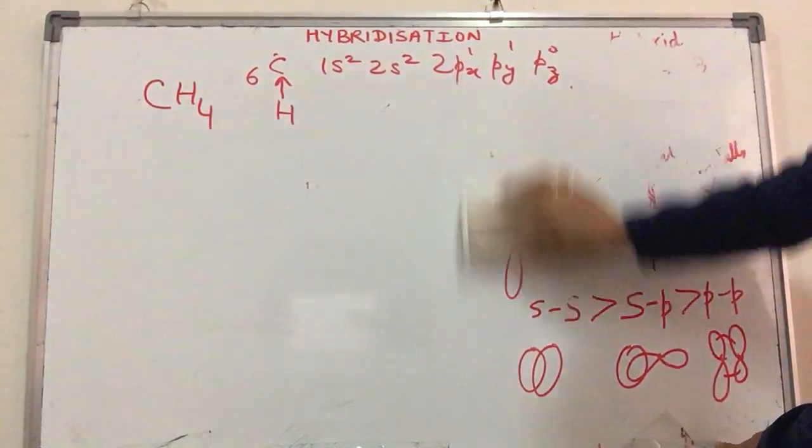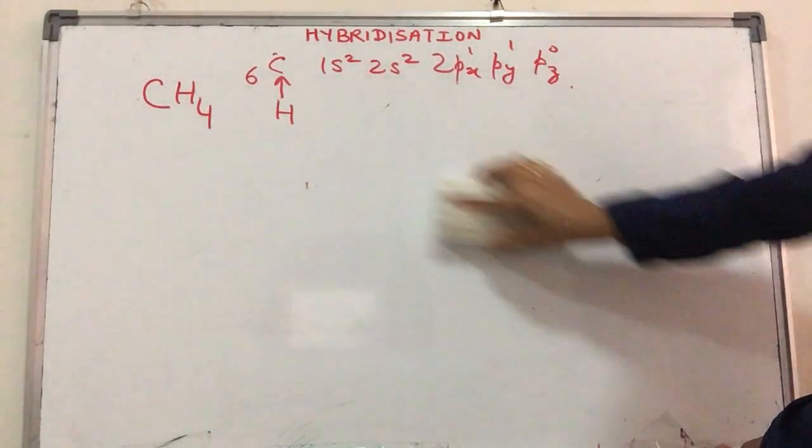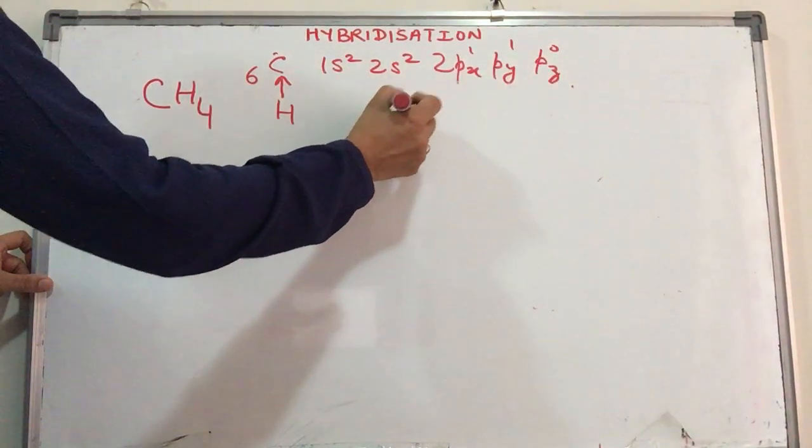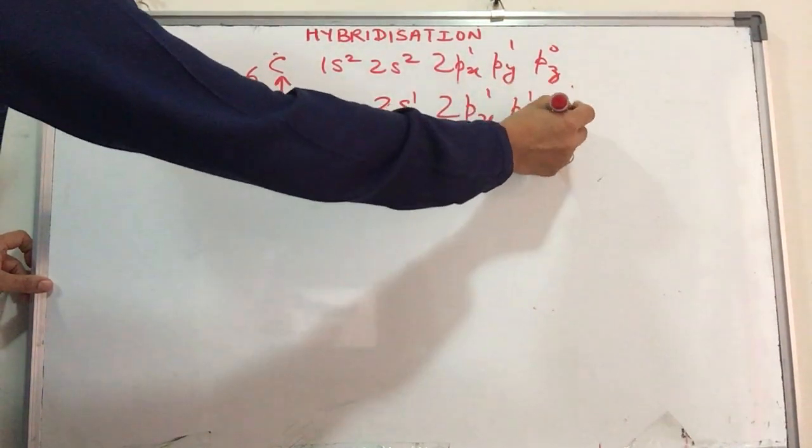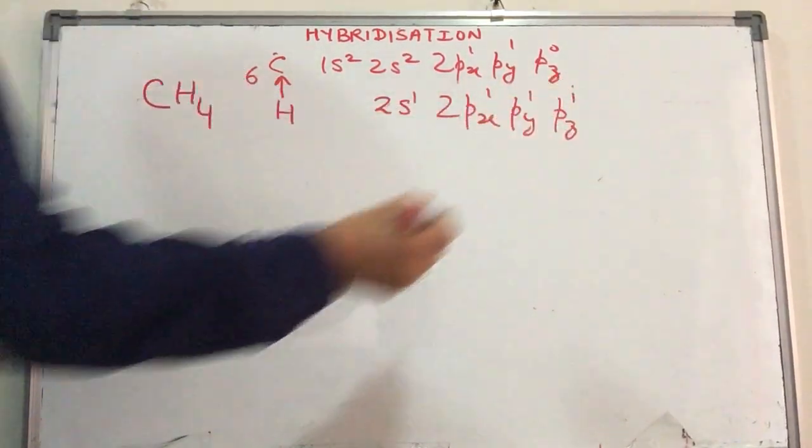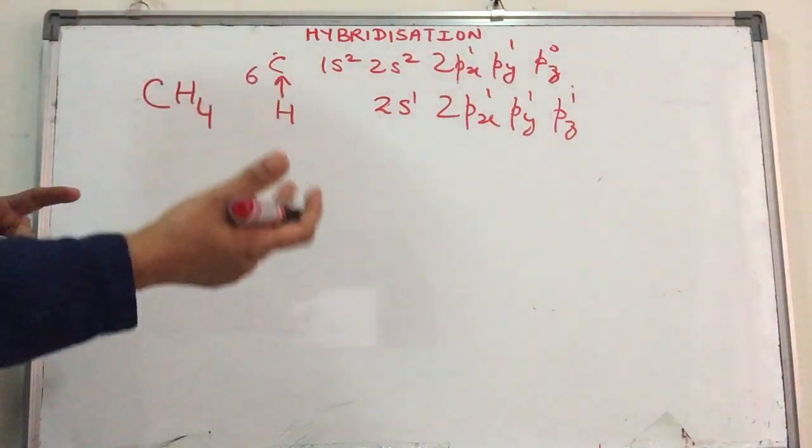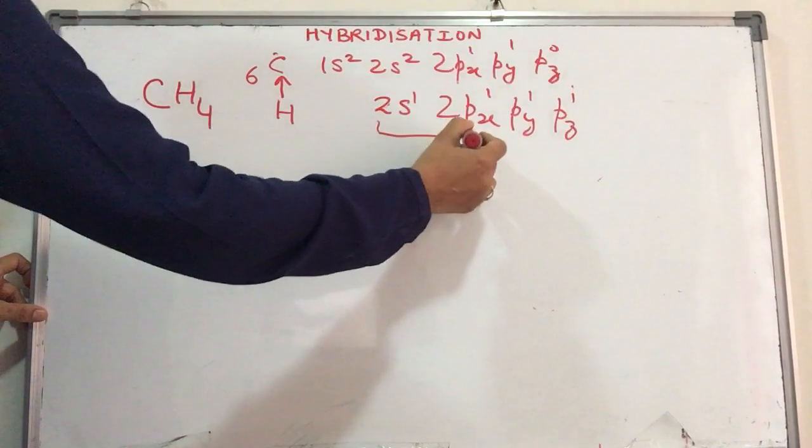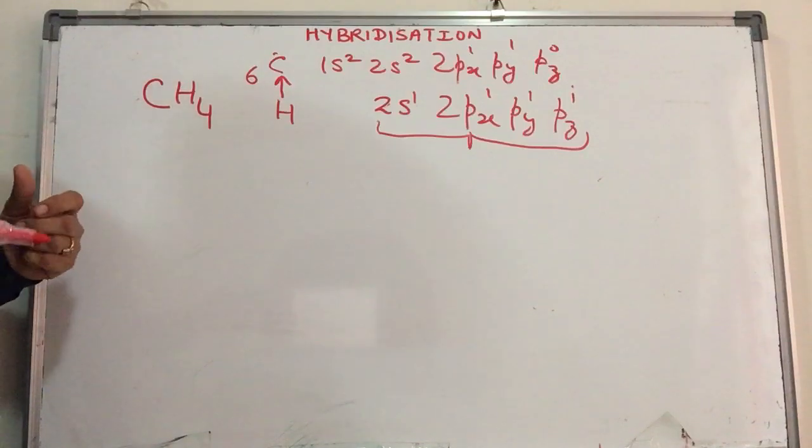In the case of carbon, on the approach of the hydrogen atom, it gets excited to give us a configuration of 2s¹, 2px¹, 2py¹, 2pz¹. Here, as the four friends did, they came together and pooled their money to buy a thing. The same thing happens over here.